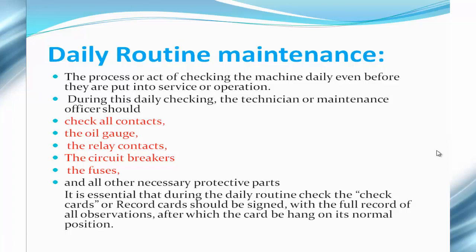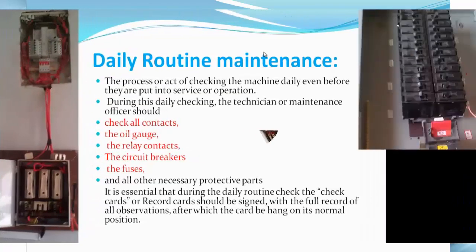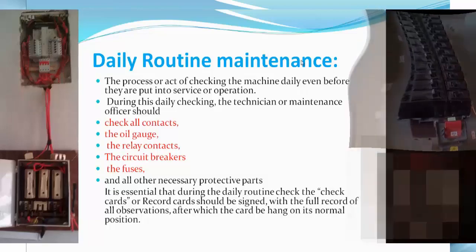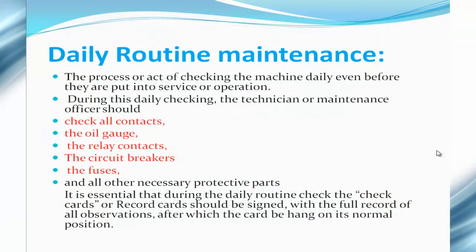The daily routine maintenance, just as the name implies, is the type of maintenance carried out on a daily basis. Even before the machine is put to use each day, you have to inspect it to make sure it is in proper condition and order. The technician must check all contacts, the oil gauge, relay contacts, circuit breakers, fuses, and other necessary protective parts. Check cards or record cards should be signed with full observations recorded, after which the card is returned to its normal position.